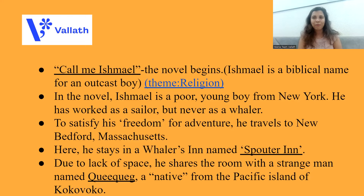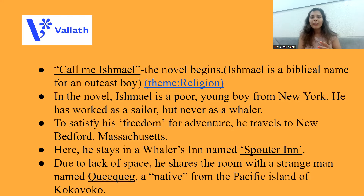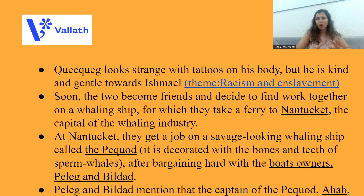To satisfy his freedom for adventure, Ishmael travels to New Bedford, Massachusetts, where he stays in a whaler's inn — a small motel named Spouter Inn. So many people are there wanting to go on the whaling expedition, and there is very little space, because of which Ishmael has to share a room with a very strange, mischievous man whose name is Queequeg. He's a native from the Pacific island of Kokovoko. Queequeg is very strange — he has tattoos on his body — but he is very kind and gentle towards Ishmael.